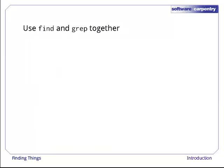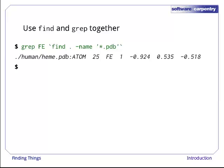It's very common to use find and grep together. The first finds files that match a pattern. The second looks for lines inside those files. Here, for example, we can find PDB files that contain iron atoms by looking for the string FE in all the PDB files below the current directory. If you've forgotten your high school chemistry, FE is the atomic symbol for iron.